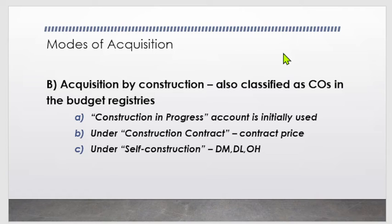The ₱4 million performance bond is then remitted to the National Treasury: debit Cash-Treasury/Agency Deposit, credit Cash-Collecting Officer, ₱4 million. On February 1, Entity A makes a 15% advance payment to the contractor (₱6 million). The entry is: debit Advances to Contractors ₱6 million, credit Cash-MDS Regular ₱6 million. Advance payments are allowed as long as indicated in the contract.